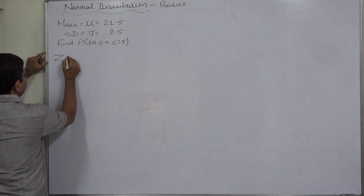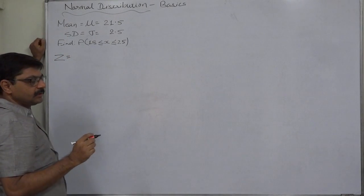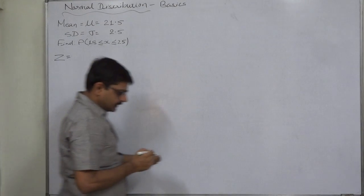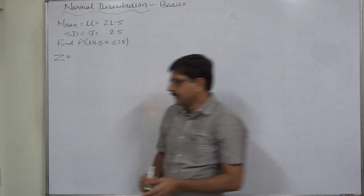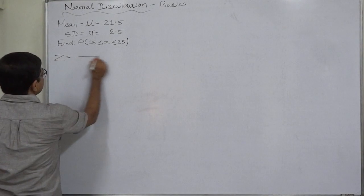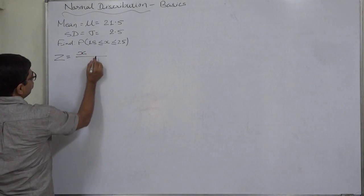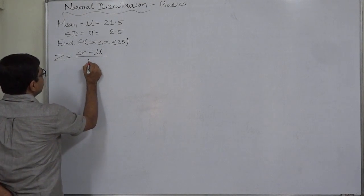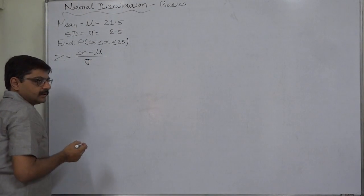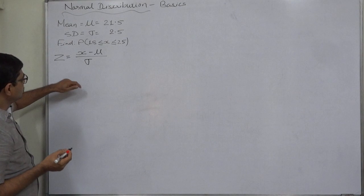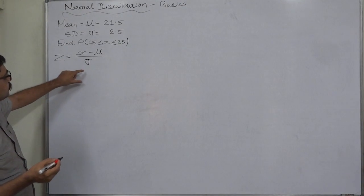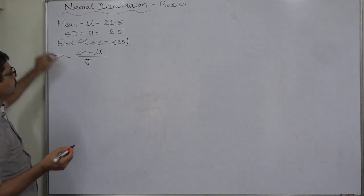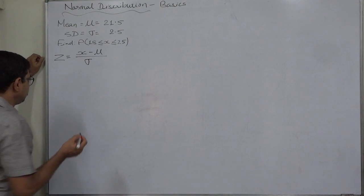To solve any problem of normal distribution, we consider z, or the z-score — the standard normal variable. Z is any value of the variable minus the mean, divided by the standard deviation: z = (x − μ) / σ.